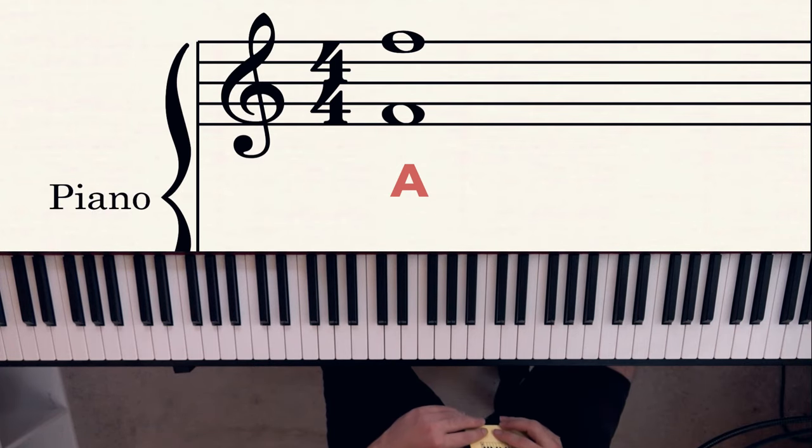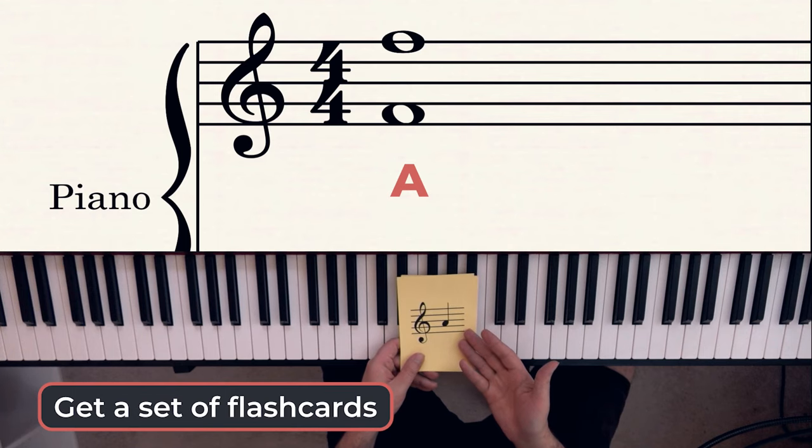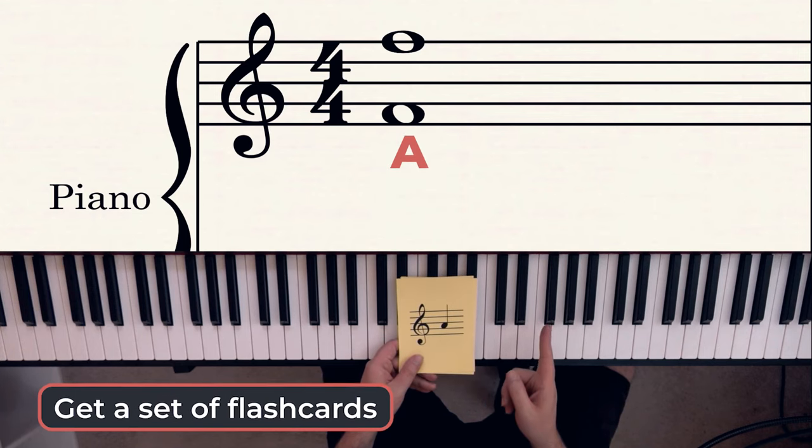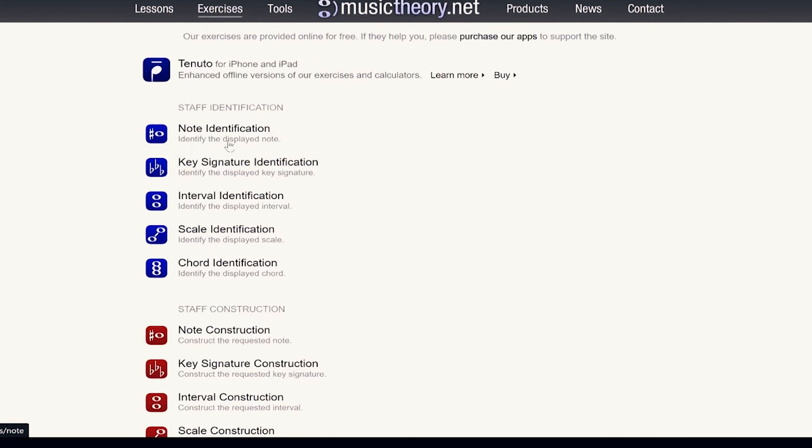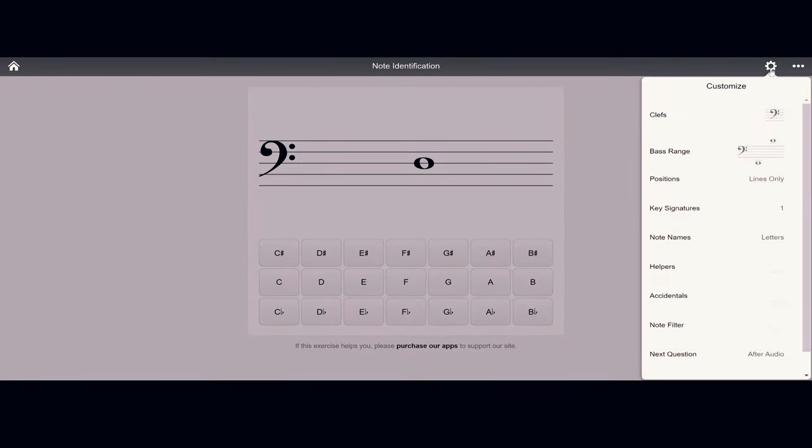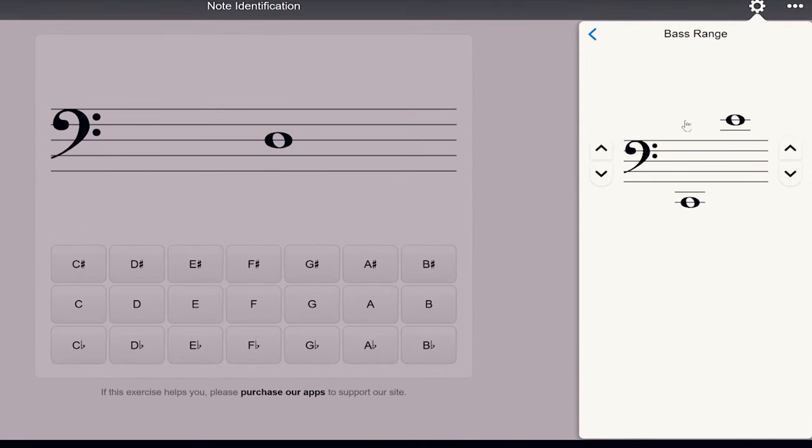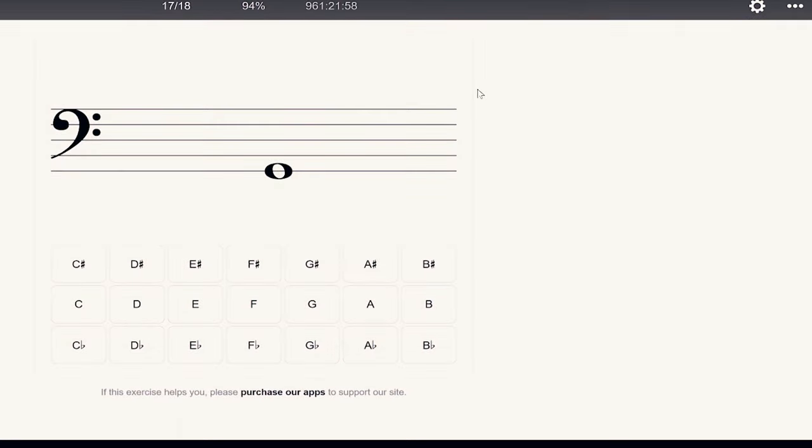Before we move on to level three, I just want to point out that you can practice your note reading by getting flashcards on Amazon, or by going to musictheory.net, clicking on exercises and going to note identification. Just make sure you click the little gear at the top, select the notes that you actually know. If you're not very good at ledger lines, reduce them to the staff there. And I would do about 50 of these every time you practice.